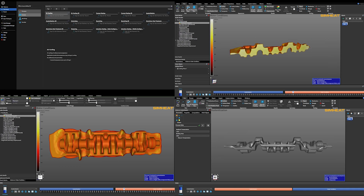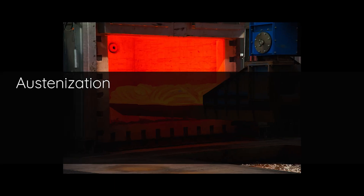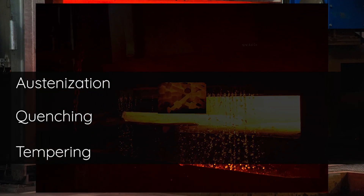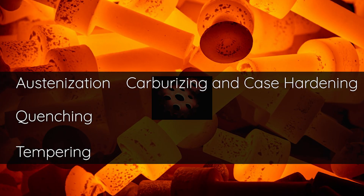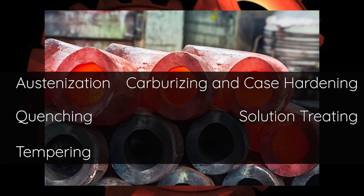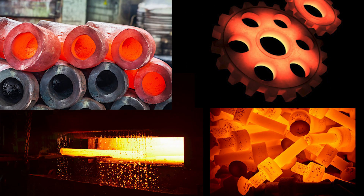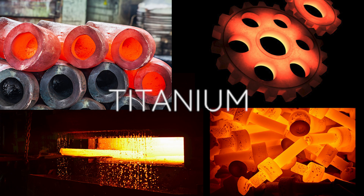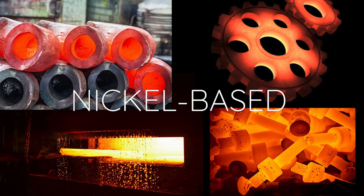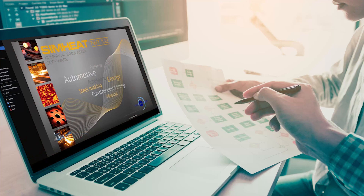With SimHeat, simulate heat treatment processes such as austenization, quenching, tempering, carburizing and case hardening, as well as solution treating and aging for aluminum. Either you heat treat steel alloys, titanium, nickel-based alloys or aluminum, SimHeat is the solution for you.